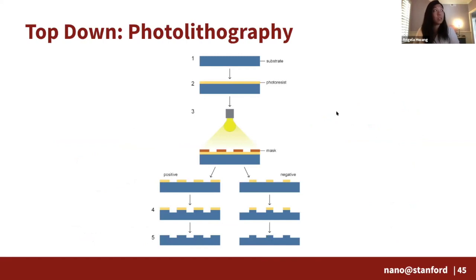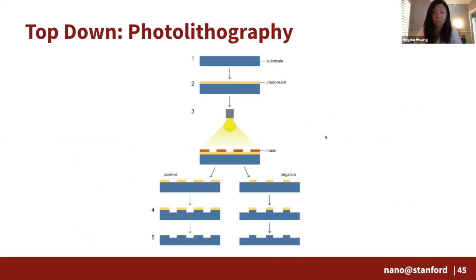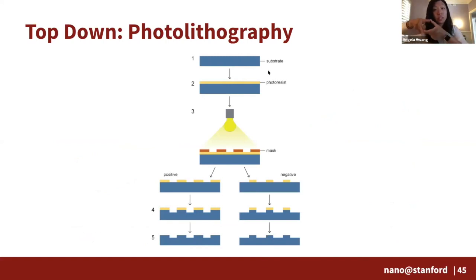We have something called photolithography. Photolithography is a top-down method used to create silicon wafers that go inside your phones — your microchips, memory devices, and all the little inner workings of your motherboard are actually built through this process. In this process you use a substrate, and typically it is silicon.